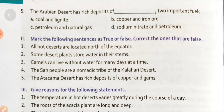Now, give reasons for the following statements. First statement: 'The temperature in hot deserts varies greatly during the course of the day.' In desert regions the temperature varies greatly because there is very little moisture. No clouds form, and without clouds to block the heat, the land heats up quickly during the day and cools down fast during the night. Thus the temperature moves from extremely hot to cold within hours.